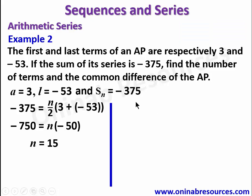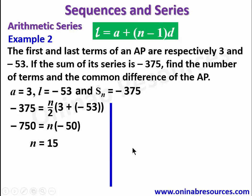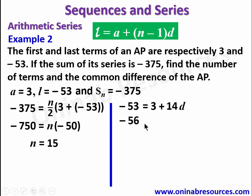To find the common difference, we use the last term formula. Our last term is negative 53, first term is 3, and number of terms is 15. So negative 53 equals 3 plus 14 times d. Bringing 3 across: negative 56 equals 14d. Dividing both sides by 14 gives d equals negative 4. That is the common difference, completing example 2.